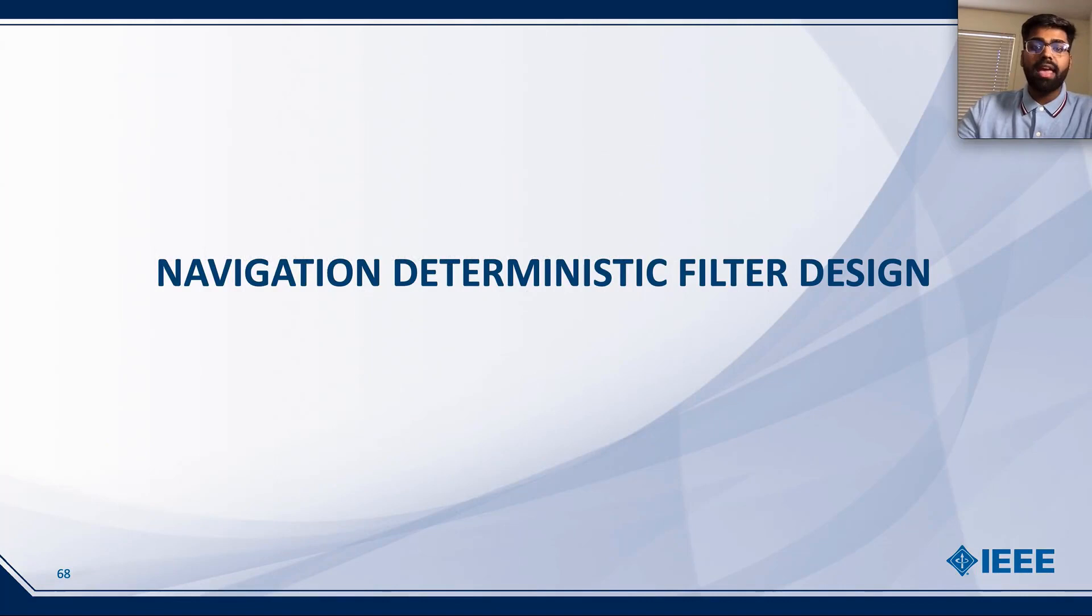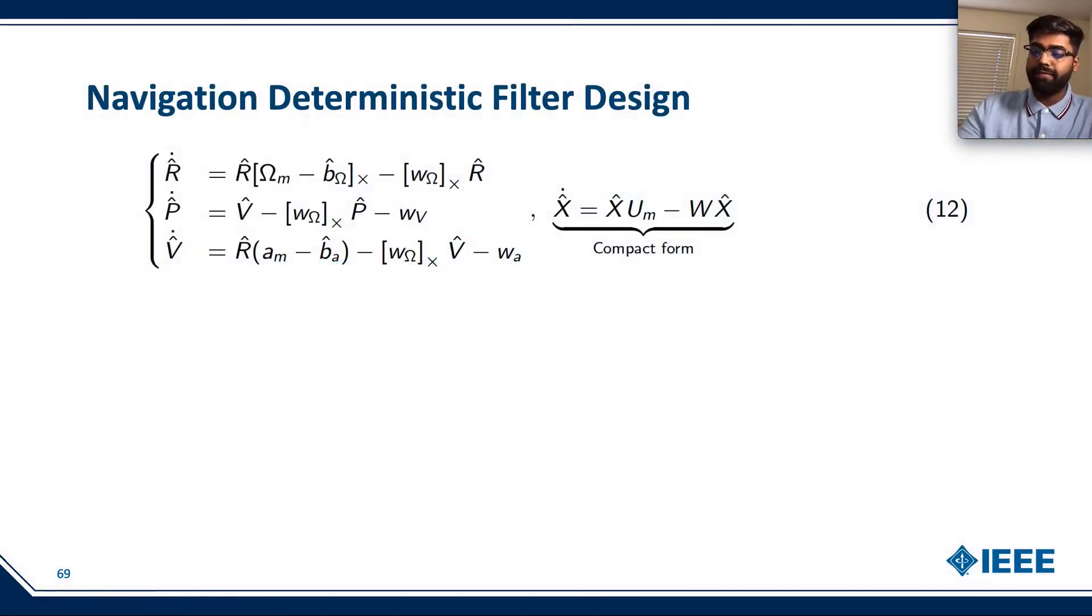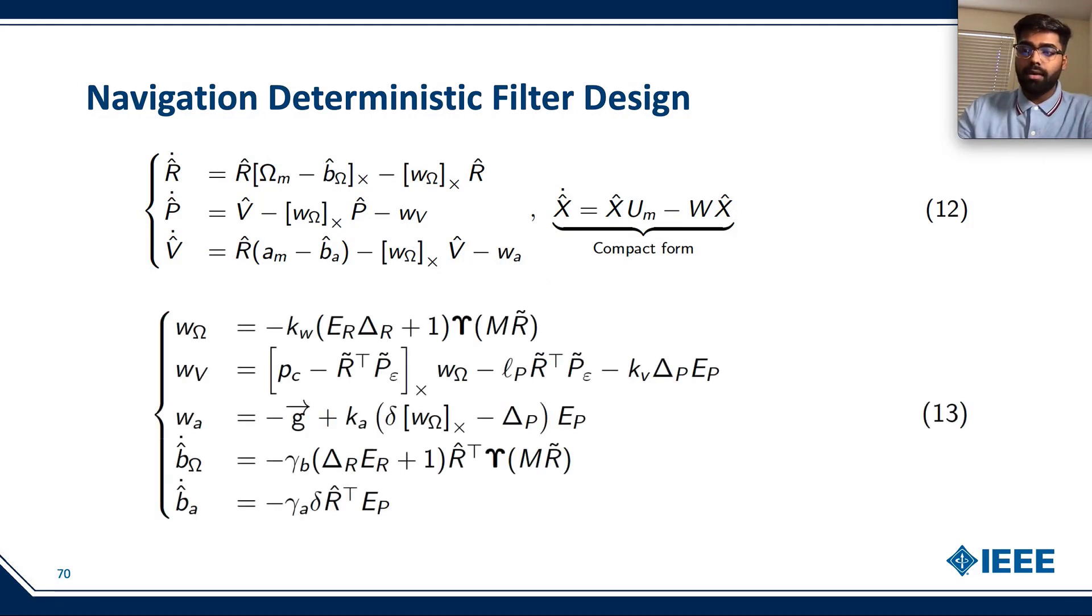Now let's discuss the navigation deterministic filter design. Consider the following deterministic filter design, where the left side includes the detail dynamics and the right side includes the compact form. From the above equations, w omega, w v, w a are defined as follows. Whereas b hat omega and b hat a are defined over here.